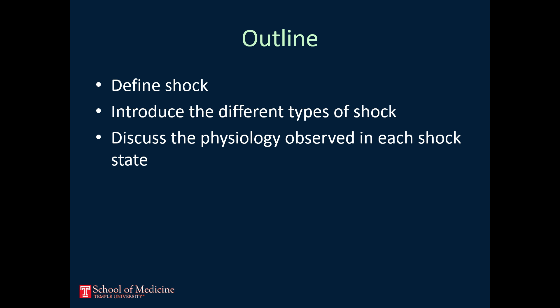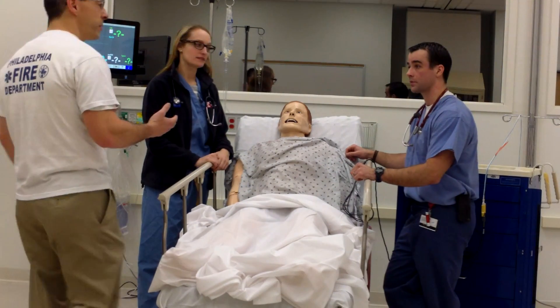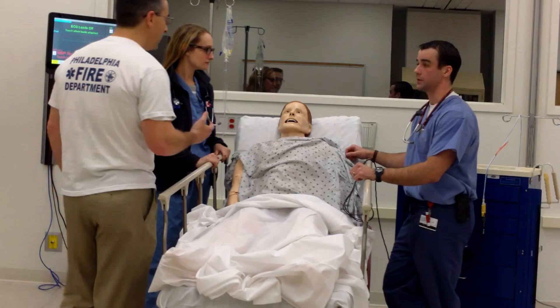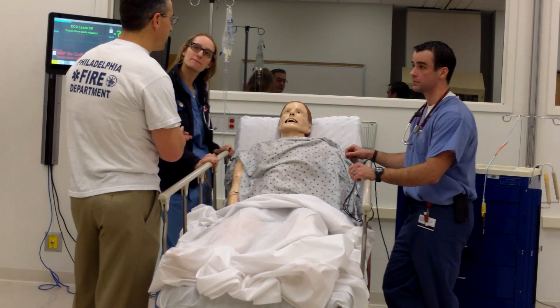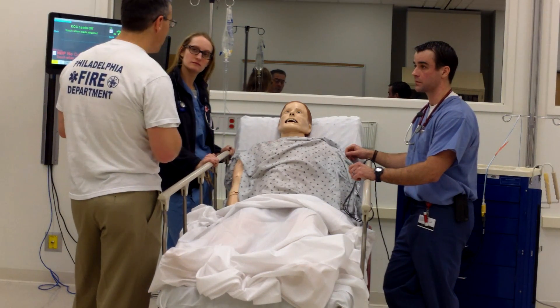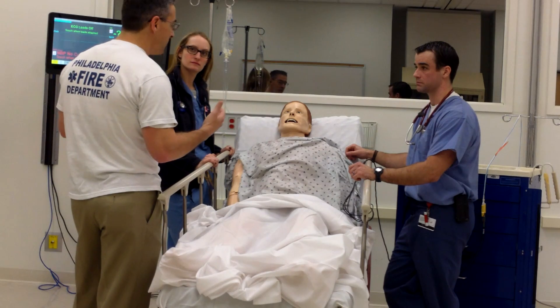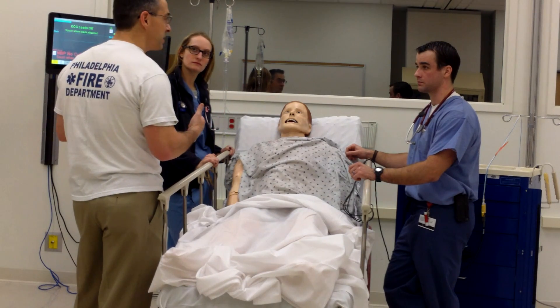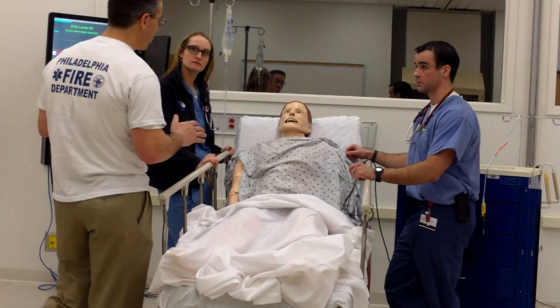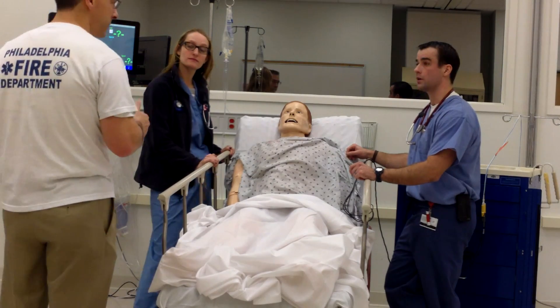Let's see how this clinical scenario might look. Doc, this is Mr. Stevens. We just brought him in from home. His wife called the ambulance. He was having a lot of chest pain. He said he was really weak, having a hard time getting out of bed. We checked his vital signs — his heart rate was about 115 or so, and his blood pressure was in the 70s. He was kind of sick. I'm not sure what's going on with him. We tried to get him here as fast as we could.